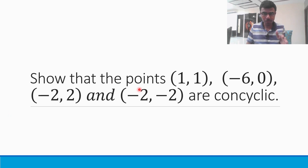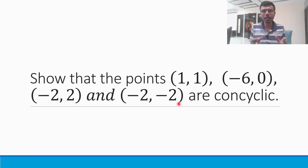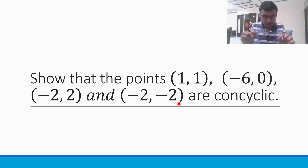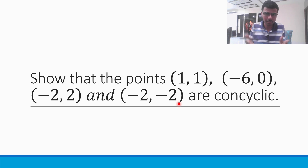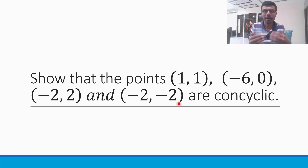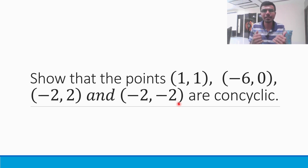Here I need to show that the given four points are concyclic. Concyclic means that the four points lie on one circle. So, what I'm going to do is find the equation of the circle through the first three points. Three points are sufficient to find the equation of a circle. Then I'll substitute the fourth point into that equation and see whether it satisfies. If the fourth point satisfies that equation, then it means the given points are concyclic. This is how I'm going to proceed.